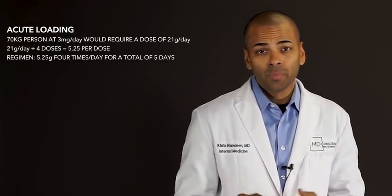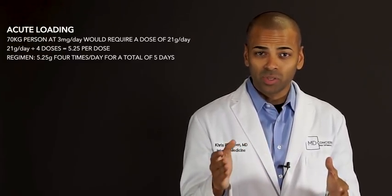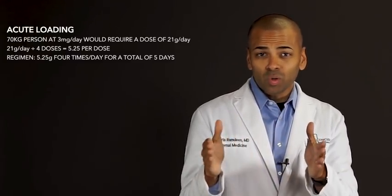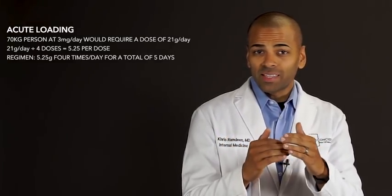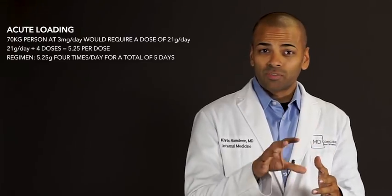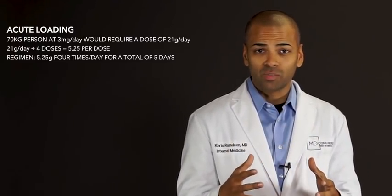If you were to do an acute load, I'll give you an example of how it's done. Let's say you're a 70 kilogram individual. The dose here would be 0.3 grams per kilogram per day of creatine, so the daily dose for that person would be 21 grams of creatine. You divide that up into four doses, which is 5.25 grams, so the regimen for that patient would be 5.25 grams per dose, four times a day for five days.